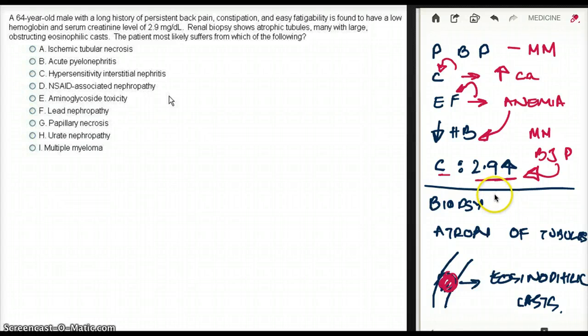So, you have to see that sometimes they're distractors, but sometimes they're actually going towards another disease, which are a little bit harder to see than hypersensitivity interstitial nephritis or NSAID-associated nephropathy. Aminoglycoside toxicity also causes nephrotoxicity, but also causes ototoxicity, teratogenic, does not cause persistent back pain or constipation.